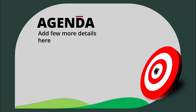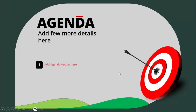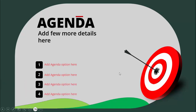In today's tutorial I'm going to show you how to create an agenda slide in PowerPoint. Here I've created this slide where I've added the agenda at the top, you can add some detailed text, and I've added one target board. When I click, an arrow comes and hits in the center, and when I click it will show you the first option, the second, third, and the fourth. Depending on the requirement you can increase or decrease these options.